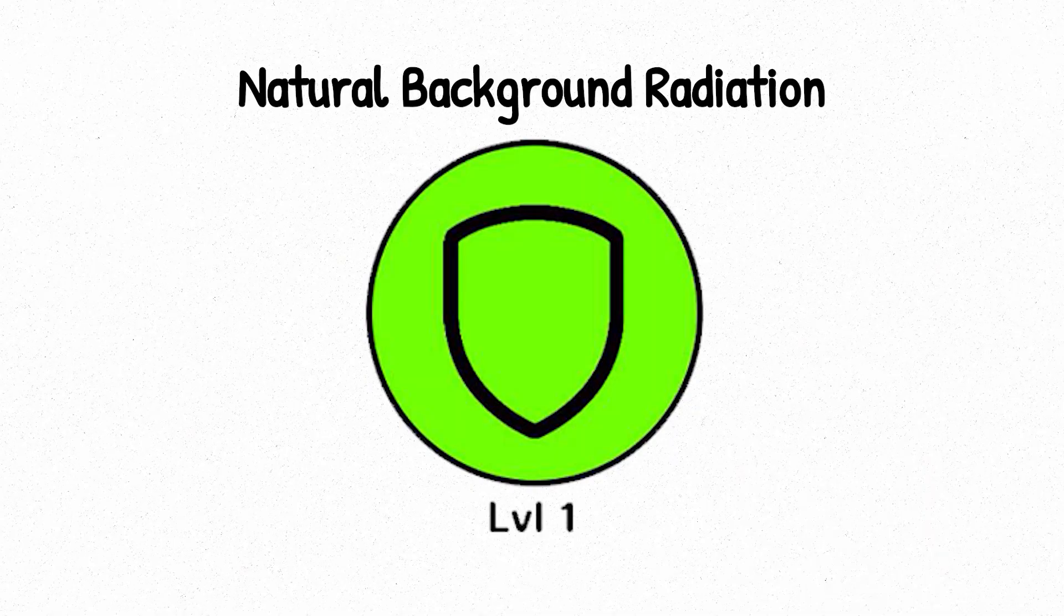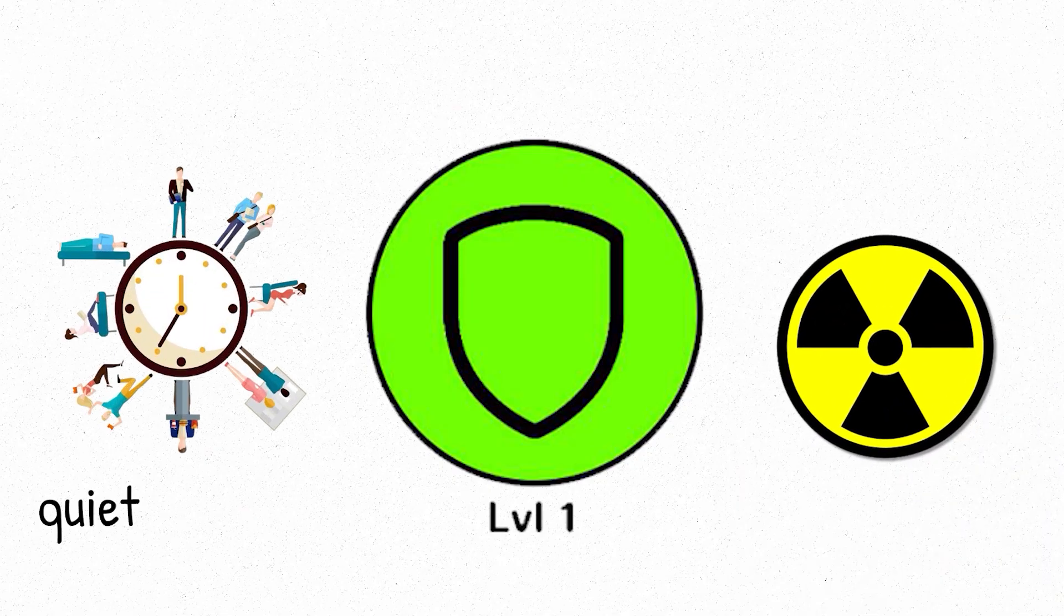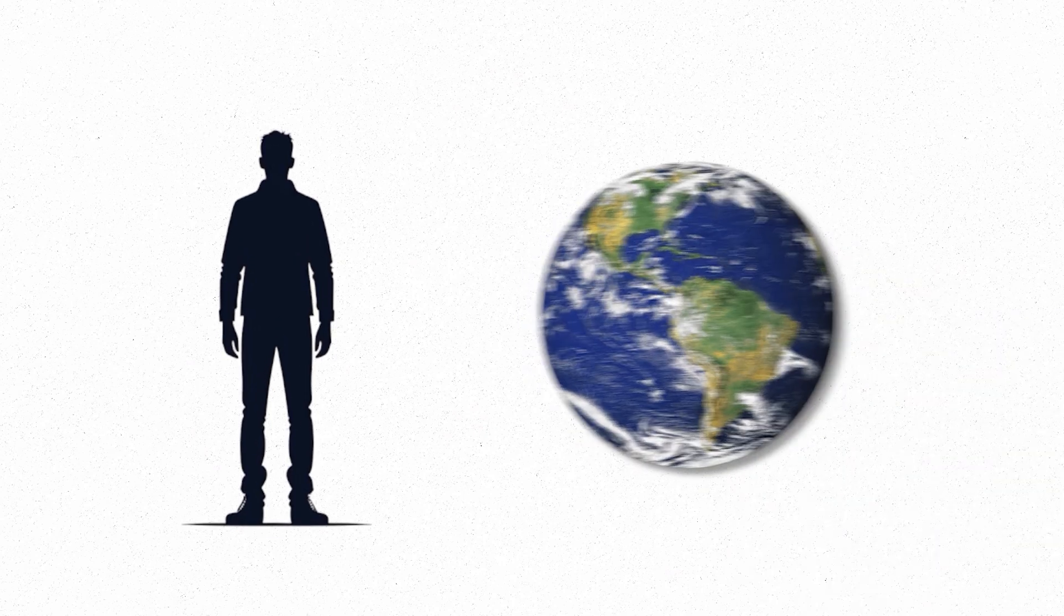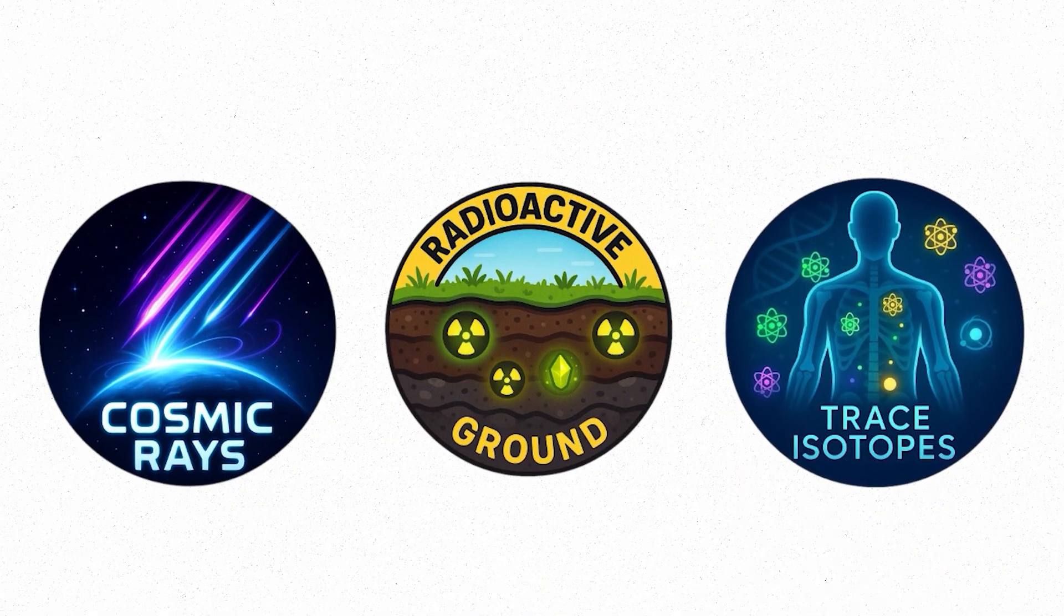Level 1. Natural background radiation. At level 1, radiation becomes part of daily life. Quiet, invisible, and constant. This is the dose you absorb simply by existing on Earth. It comes from three main sources. Cosmic rays from space, radioactive elements in the ground, and even trace isotopes inside your body.